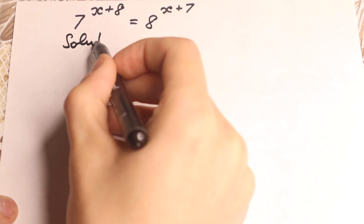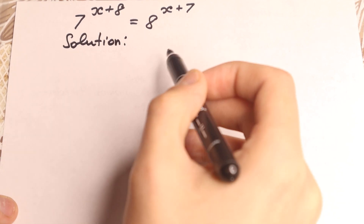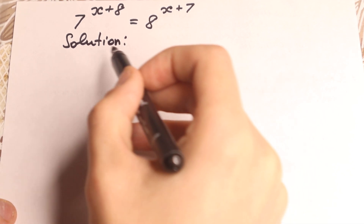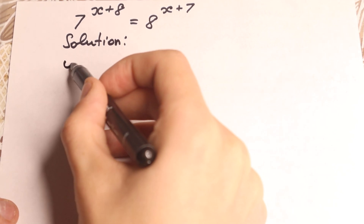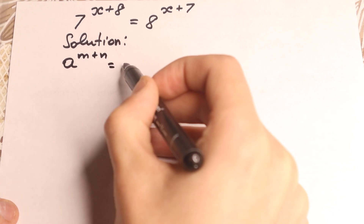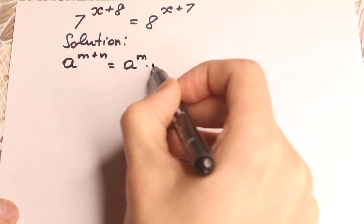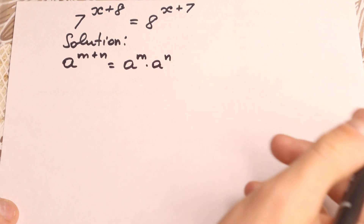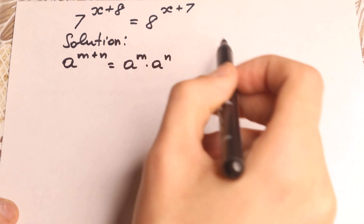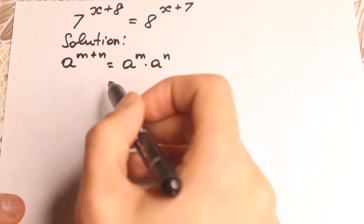We're going to solve it step by step together. First of all, what we need to know is a really interesting power rule: if we have a to the power m plus n, we can write it as a to the power m times a to the power n. This is the first step that we need to know, because right here we have the sum in our power.